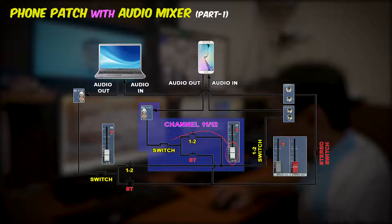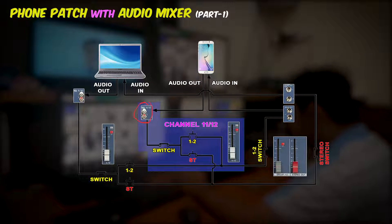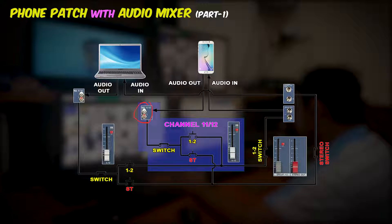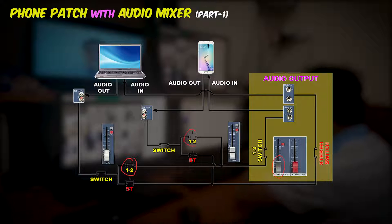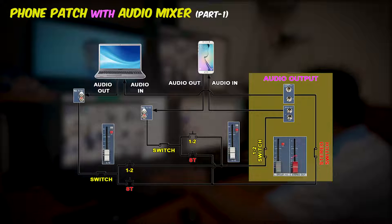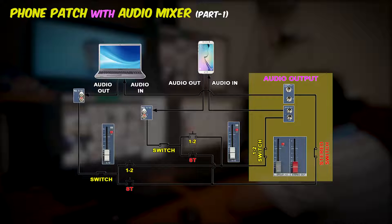These are the audio outputs from the mixer. The sliding switch button of group 1 and 2 will be the main switch of push button 1 and 2 of channel 9/10 and 11/12. And the sliding switch button ST will be the final switch of push button ST of channel 9/10 and 11/12. The audio out of group 1 and 2 is directly connected to the mic of our cell phone. And the audio out from the sliding switch button of stereo out is directly connected to the audio in of our laptop.